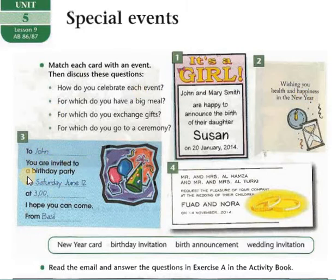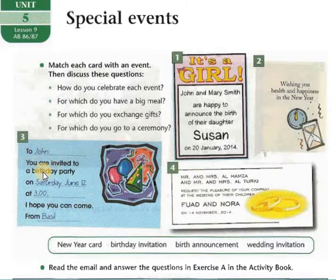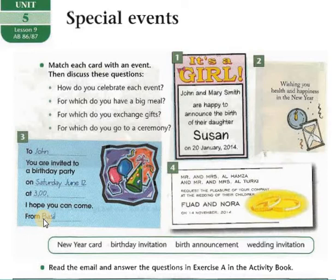Card number three: 'To John, you are invited to a birthday party on Saturday, June the 12th at three o'clock. I hope you can come. From Basel.' So John is invited to a birthday party on Saturday, June 12th at three o'clock. The invitation is from Basel.